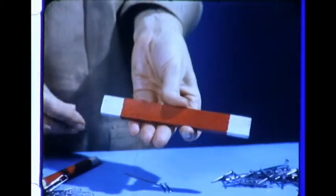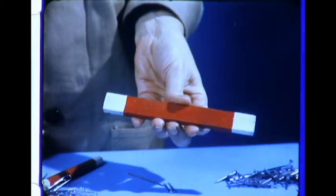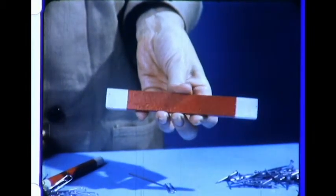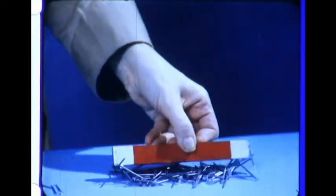Most magnets are made of steel. The bar magnet we've been using is an Alnico magnet. It is made up of several metals. It is many times stronger than an ordinary steel magnet.